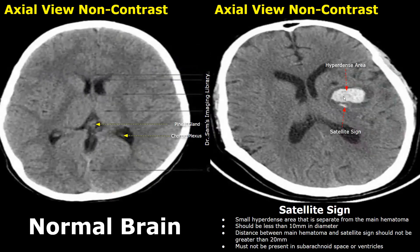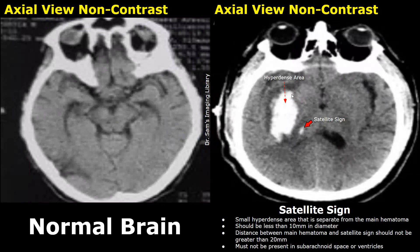The satellite sign is the term given to an appearance in which there is a large primary hematoma and a small hyperdense area that is separate from the main hematoma. This small area should be less than 10 millimeters in diameter, and the distance between the main hematoma and the smaller hematoma should not be more than 20 millimeters. The smaller hematoma should not be present in the subarachnoid space or ventricles. This is another case showing the satellite sign — a small separate hyperdense hematoma is present next to a larger hematoma.